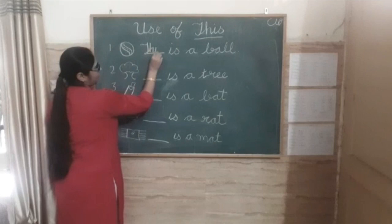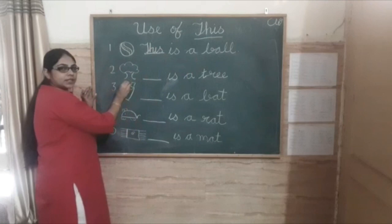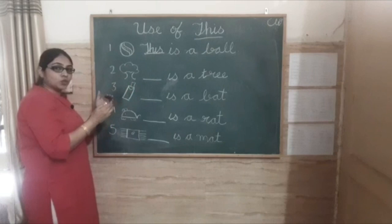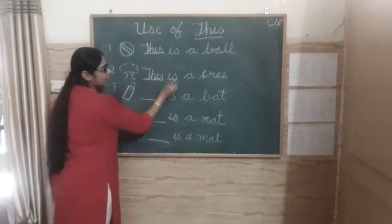What is this? Tree. This is only one tree, and the tree is near us. So we can write: This is a tree.